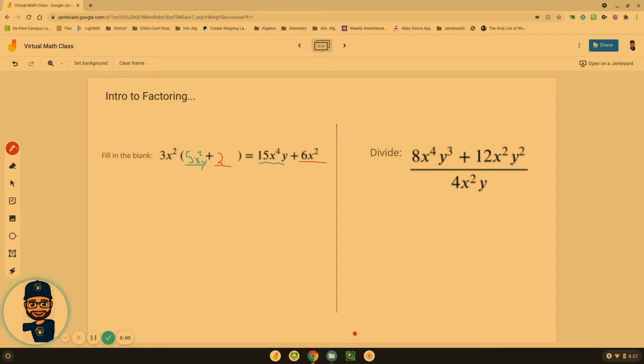Now what is happening in that process is that we're really dividing. Alright I am taking 8x to the fourth y to the third and I'm dividing it by 4x²y, plus then I'm taking 12x²y² and dividing it by 4x²y. So some of the rules that we have for exponents is that when we're dividing them they can cancel each other out. Same thing with our numbers.